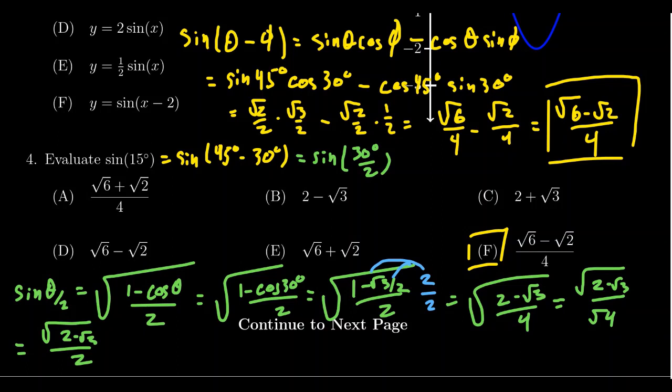This is the correct answer, but since it's a multiple choice question, you might wonder how we get something like choice F. I want to show how these two expressions are actually equal. I should note that the algebraic technique we're about to demonstrate is quite advanced — not something I expect a typical trigonometry student to do on their own. I'm showing this mostly for curiosity, so you can see the answers are equivalent. It's difficult, and I wouldn't expect someone to do this on an exam.